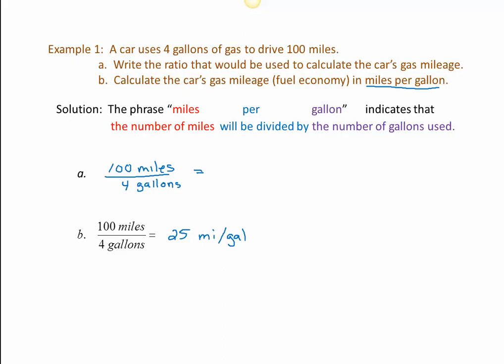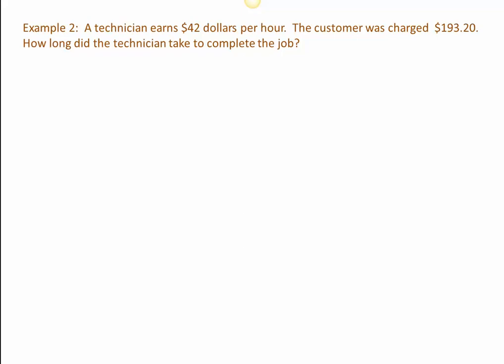Alright, let's try another one. A technician earns $42 per hour. The customer is charged $193.20. We'd like to know how long the technician took to complete the job. So we look at the units here, dollars per hour. And we know that dollars per hour is calculated by taking the total number of dollars and dividing that amount by the total number of hours. That's why we have dollars in the numerator, per for the fraction bar, and then hours.